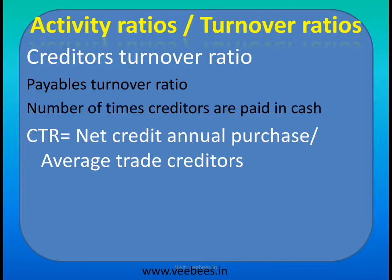Creditors represent suppliers and goods paid in cash. The creditors turnover ratio is equal to net credit annual purchase divided by average trade creditors. Compare this with debtors turnover ratio, which is equal to net credit annual sales divided by average trade debtors.